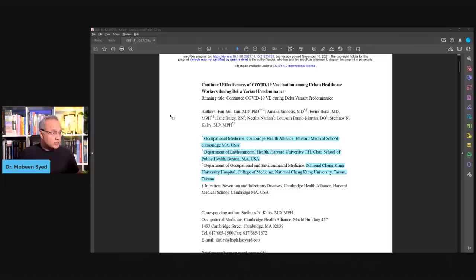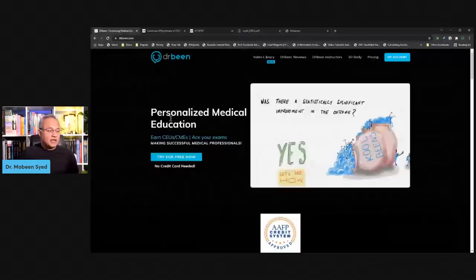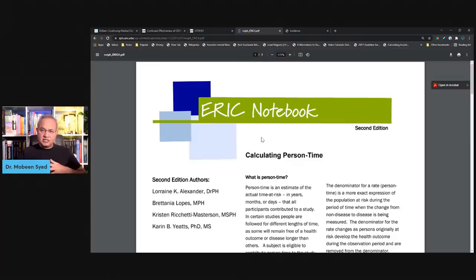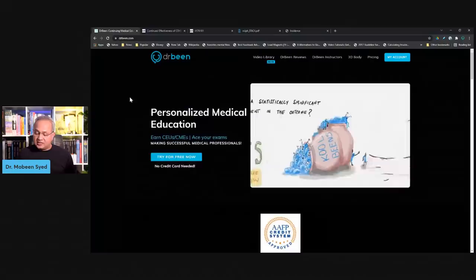So here's the study. All of these links are going to be in the description as well. I have this PDF open. Here are the links and references. This is drbeen.com. This is the study. It is a preprint: continued effectiveness of COVID-19 vaccination among urban healthcare workers during Delta variant predominance. Then during this discussion, you would see that they talk about person-days or person-years and others. They have used person-days. So if you wanted to study more what does it mean to say person-days and how do we calculate that and how does it contribute, you can read these articles.